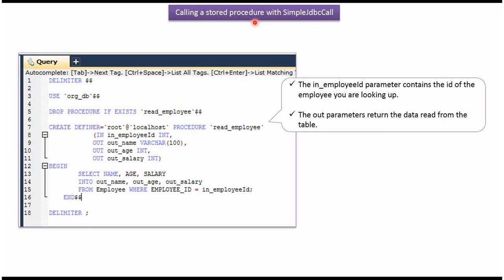In this video tutorial I will explain how to call the stored procedure using SimpleJdbcCall. The stored procedure name is read_employee. It has defined input parameters and output parameters. Based on the input parameter employee id, it will get name, age and salary values from the employee table and assign those values to the output parameters. We will see how to create this stored procedure and how to call it using SimpleJdbcCall.